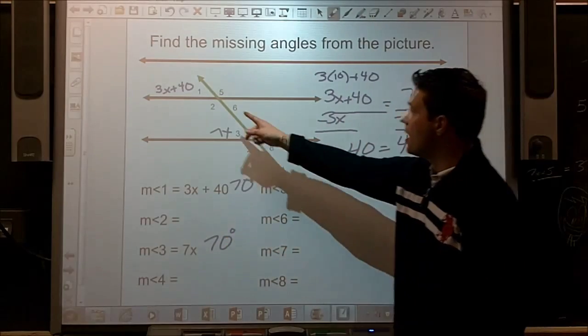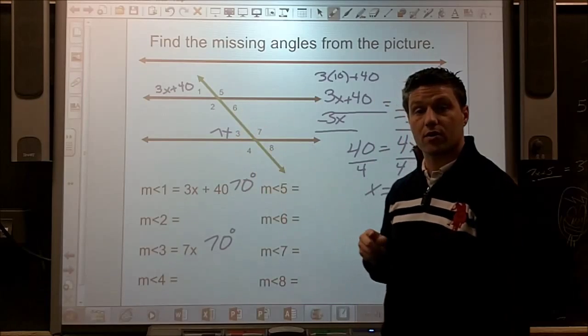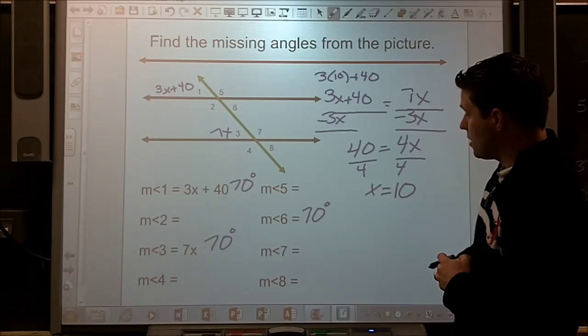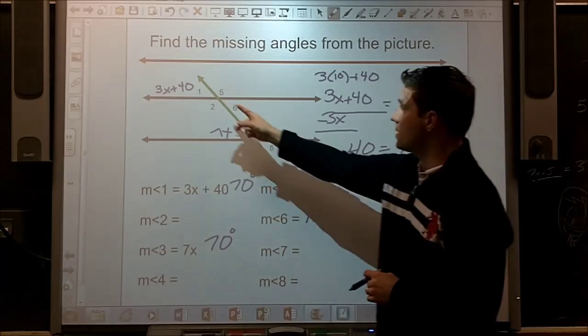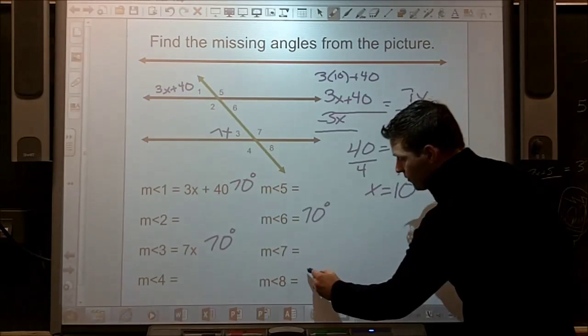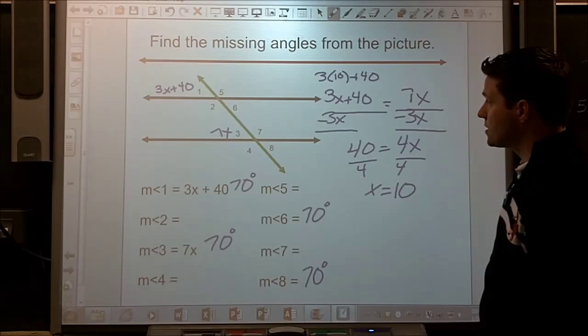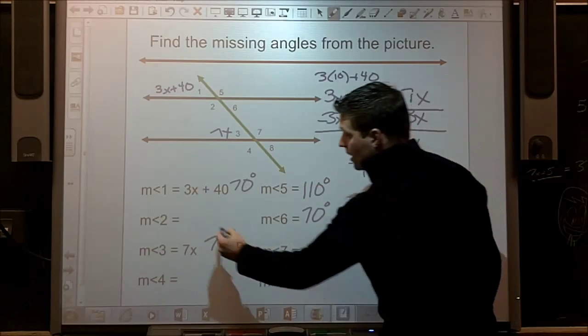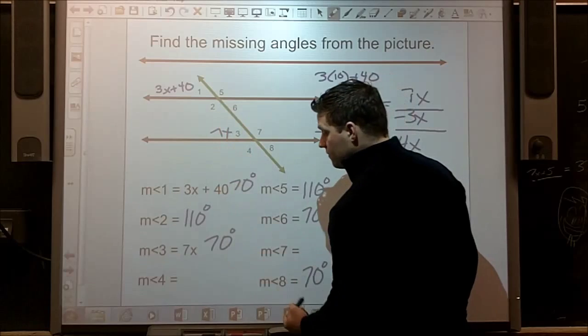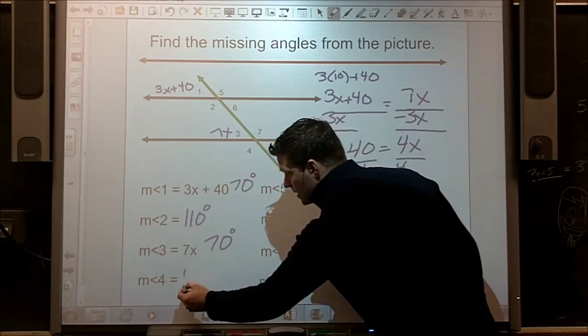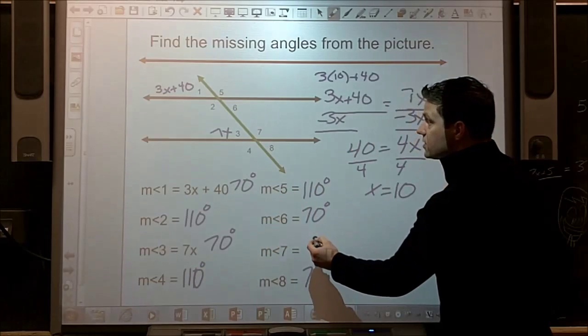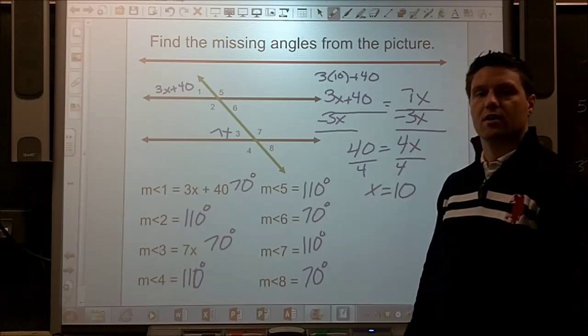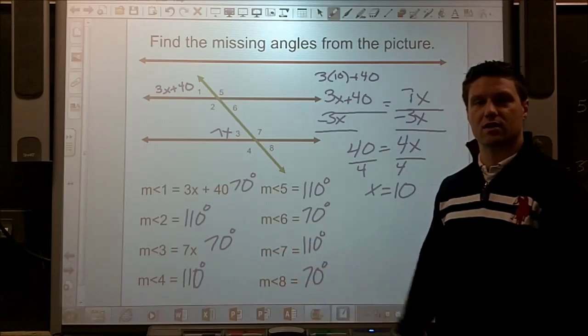Let's fill in the rest. Angle 6 is vertical to angle 1, so that must also be a 70. And there's got to be one more 70 degree angle. It's going to be angle 8 because it's alternate exterior with the first angle that we found, angle 1. Let's fill in the rest. Angle 5, that's got to be supplementary, so it's got to be 110. Angle 2 is 110, it's vertical to 5. Angle 4, just making sure I have this right, yep, it is 110 as well. And angle 7, it's got to be 110.